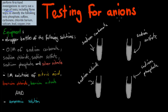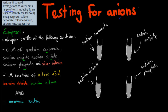We're testing for anions first, and this is the equipment you have. You might do a different one in your class, but overall the main idea is the same — we're testing for anions and cations. What you might have is these dropper bottles of the following solutions: sodium carbonate, sodium chloride, sodium sulfate, and sodium phosphate. The ones underlined in green — these are our anions, the ones we're testing.